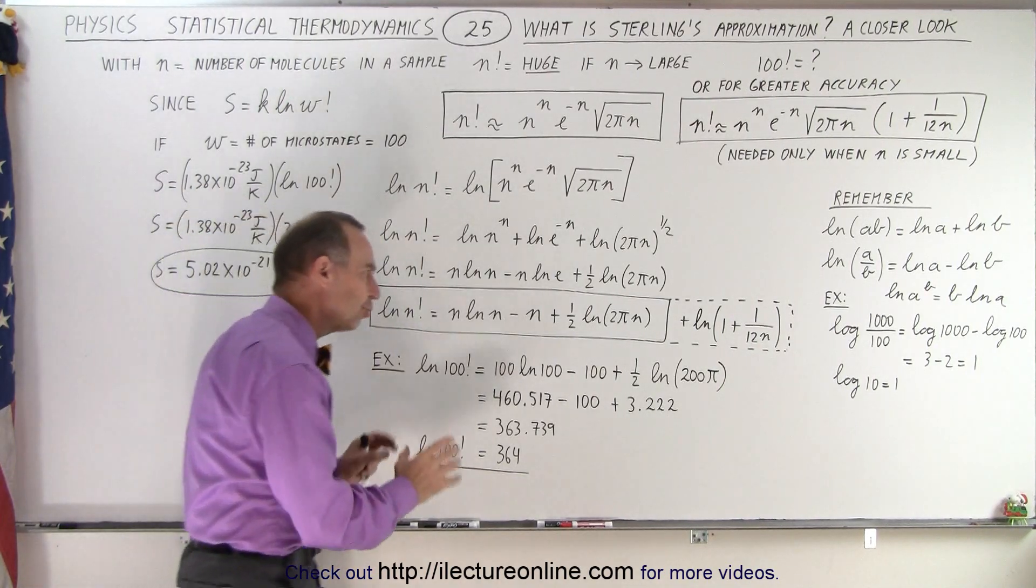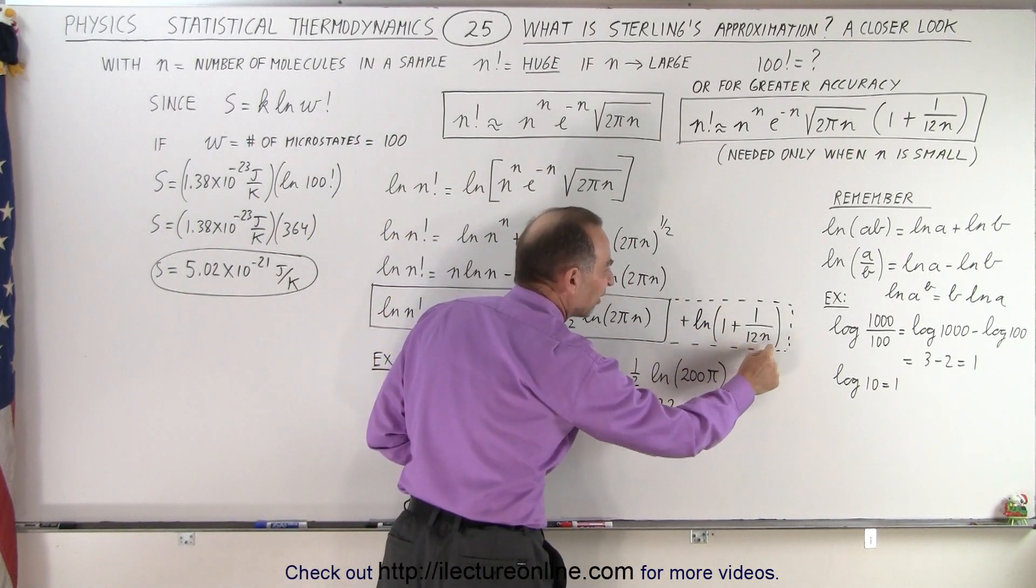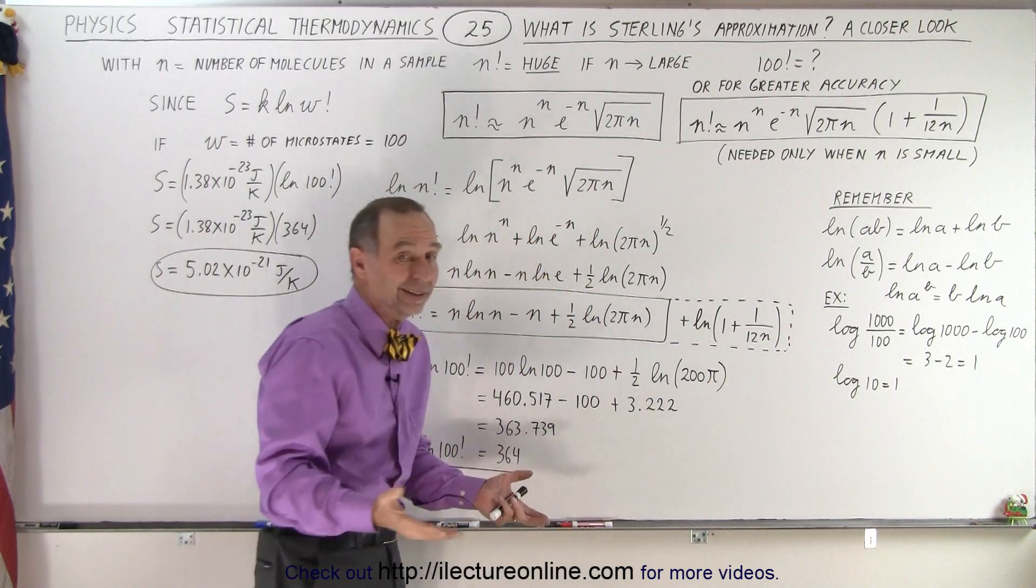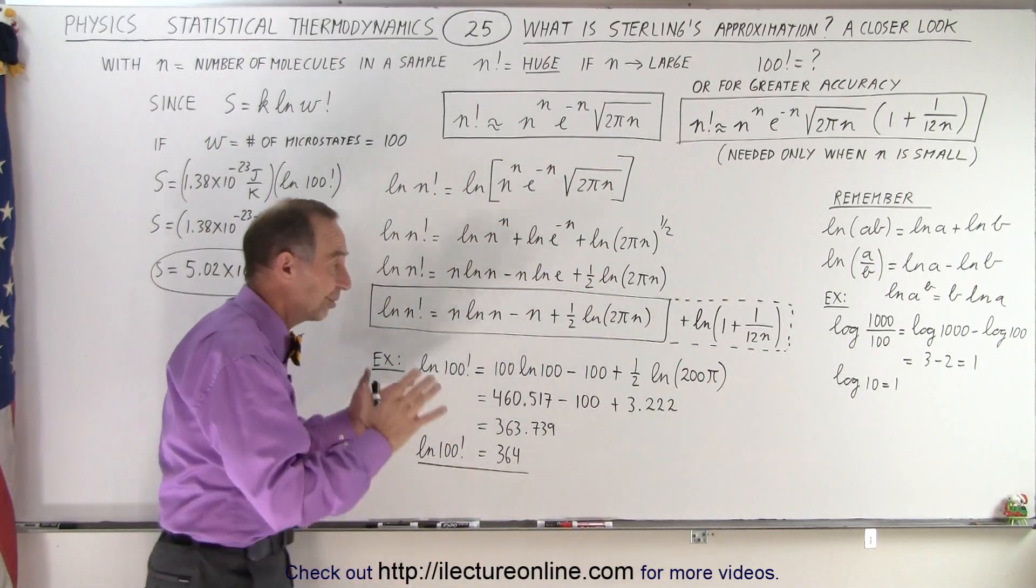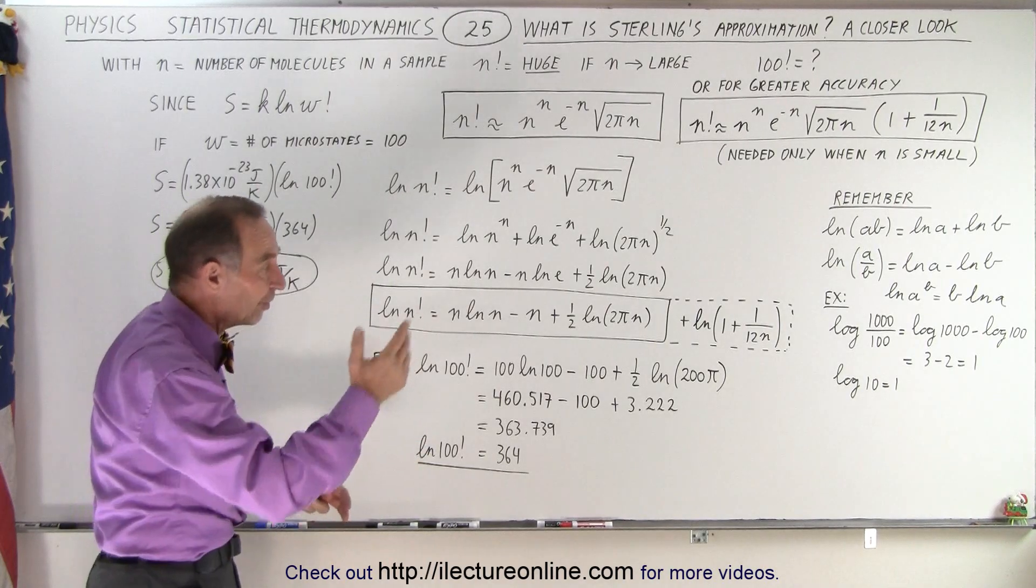Of course if n is small you may want to add this additional term in there plus the natural log of 1 plus 1 over 12n, but notice if n is 100 that's essentially equal to 1 so you really don't need that, and of course the natural log of 1 is 0 so it doesn't add anything.